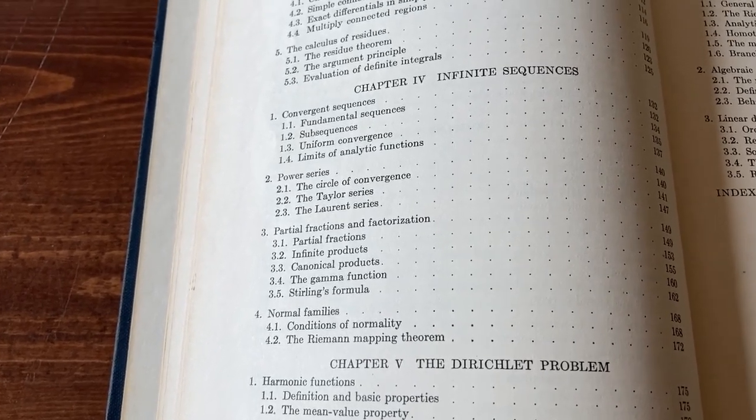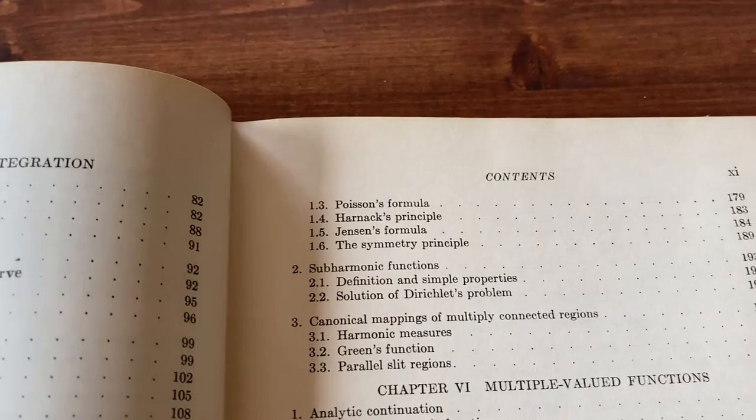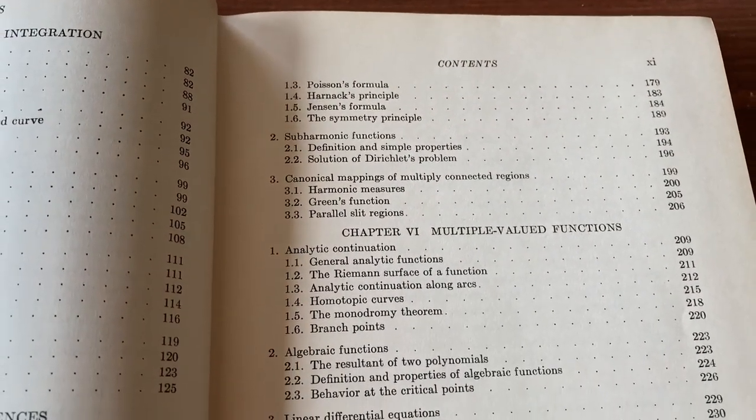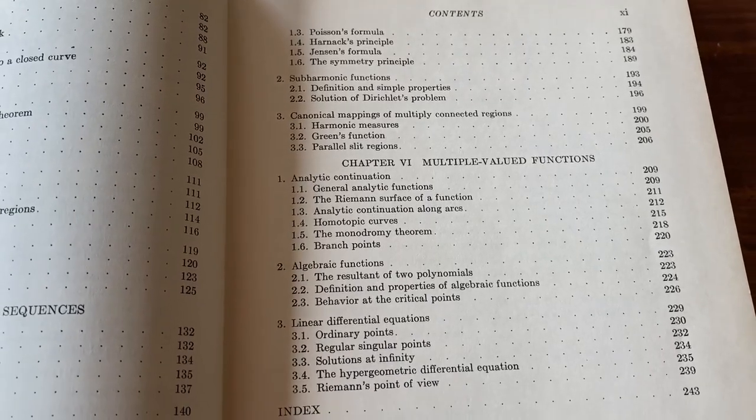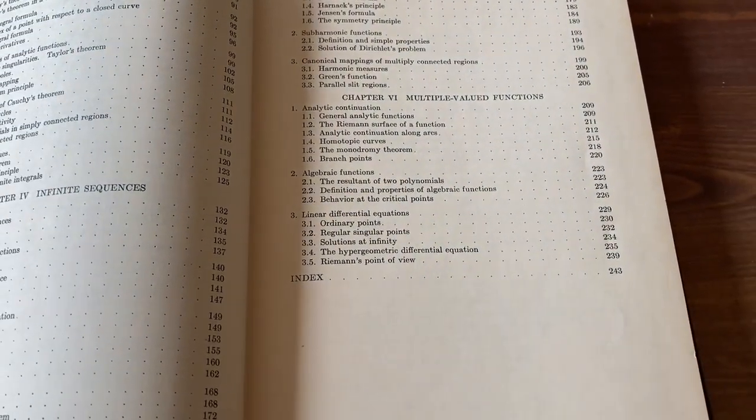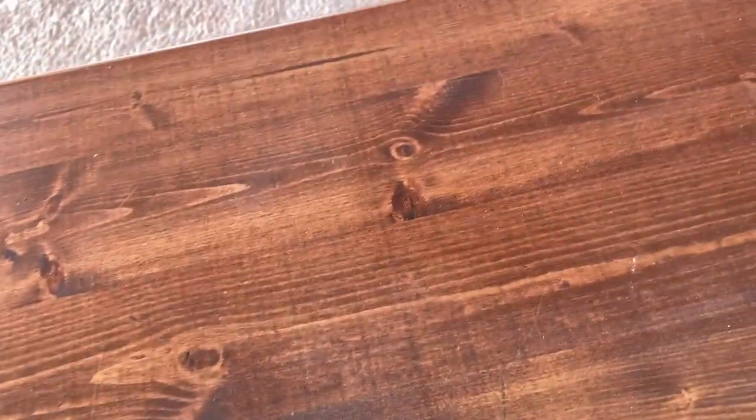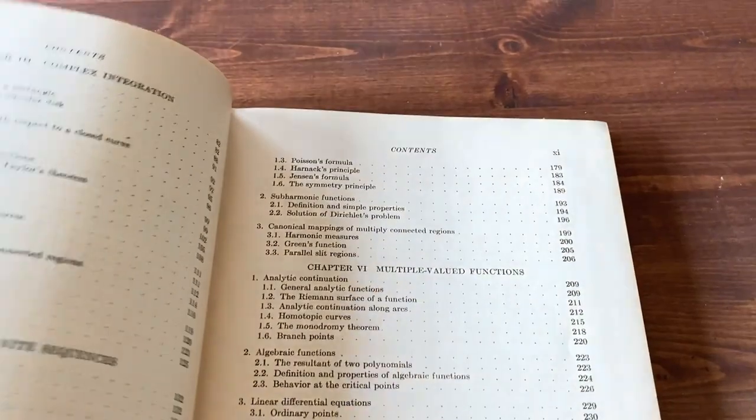Chapter five is the Dirichlet problem. Chapter six is on multi-valued functions. Wow, I can smell the book, and I'm pretty far away. And it smells really, really good. It has that old book smell. I'm just going to give it a whiff here. Wow. What a classic book.